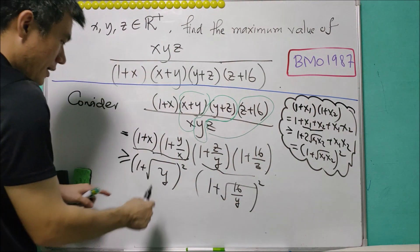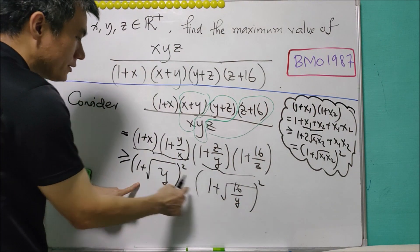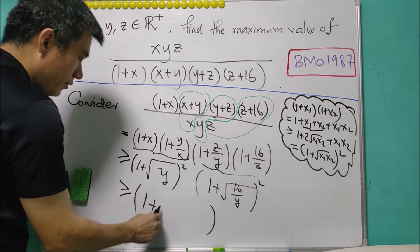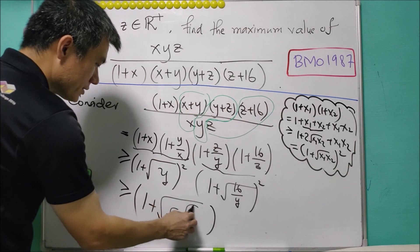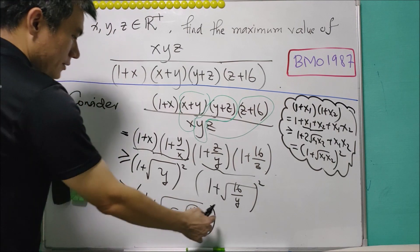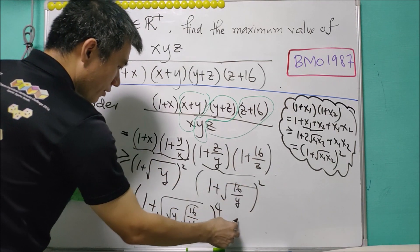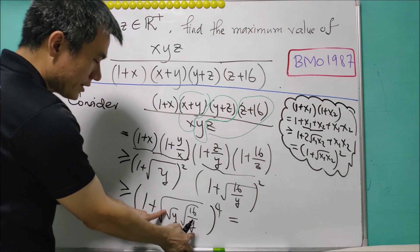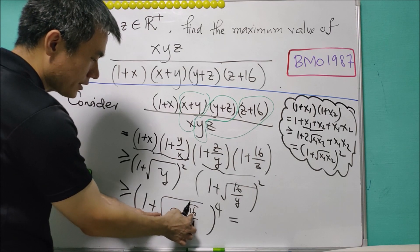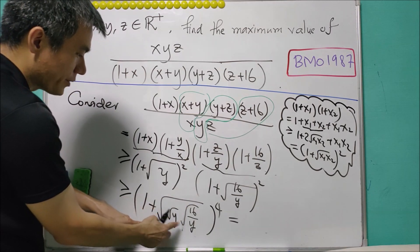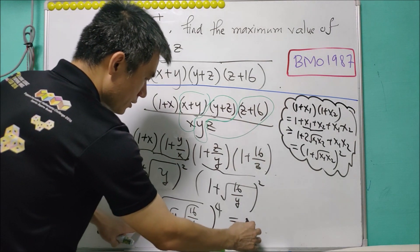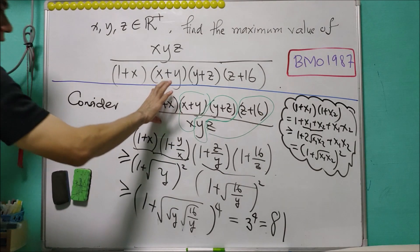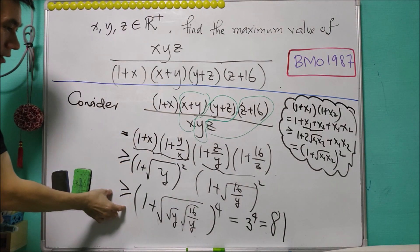Combining these two results, the full expression is at least (1+√Y)²·(1+√(16/Y))². We can take the square out and apply our lemma again: (1+√Y)(1+√(16/Y)) ≥ (1 + (16/Y·Y)^(1/4)) = (1 + 16^(1/4)). Since √Y cancels and √16 = 4, √4 = 2, this gives (1+2)² squared, which is 3^4 = 81. So the expression is greater than or equal to 81.